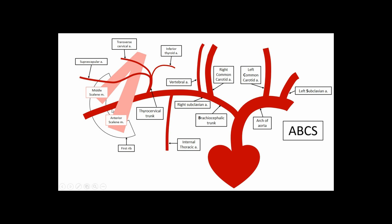Before the subclavian artery can leave the thoracic outlet, it passes through a small tunnel formed by the anterior scalene and middle scalene muscles attaching to the first rib. These are accessory muscles of respiration — if a patient is using them to help elevate the first rib and expand the thoracic cage, they have very labored breathing and will require assistance. The anterior and middle scalenes attach to the first rib, while the posterior scalene attaches to the second rib — I remember this with the mnemonic 'I get up at 1am to pee.'